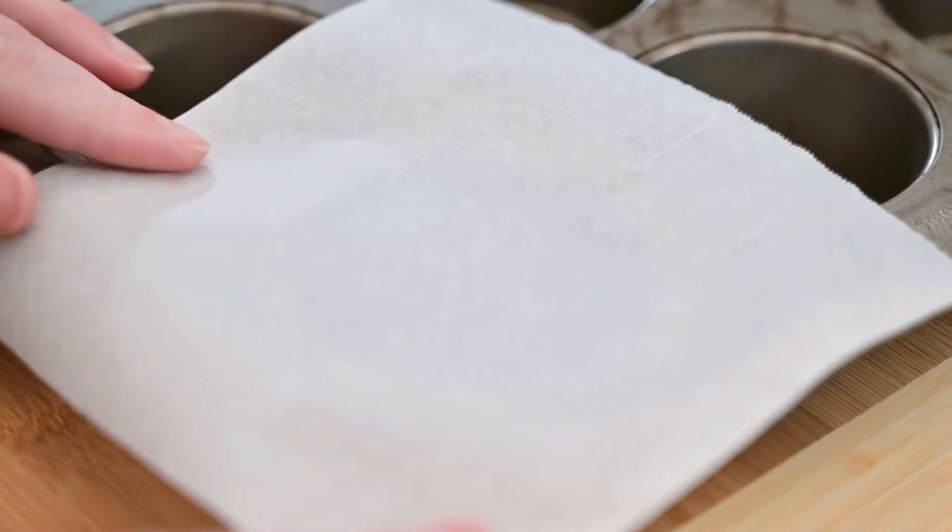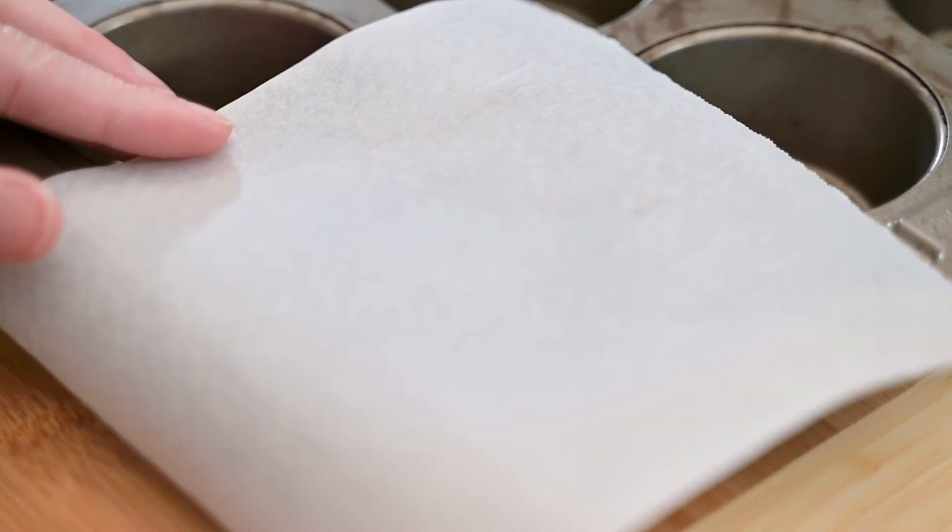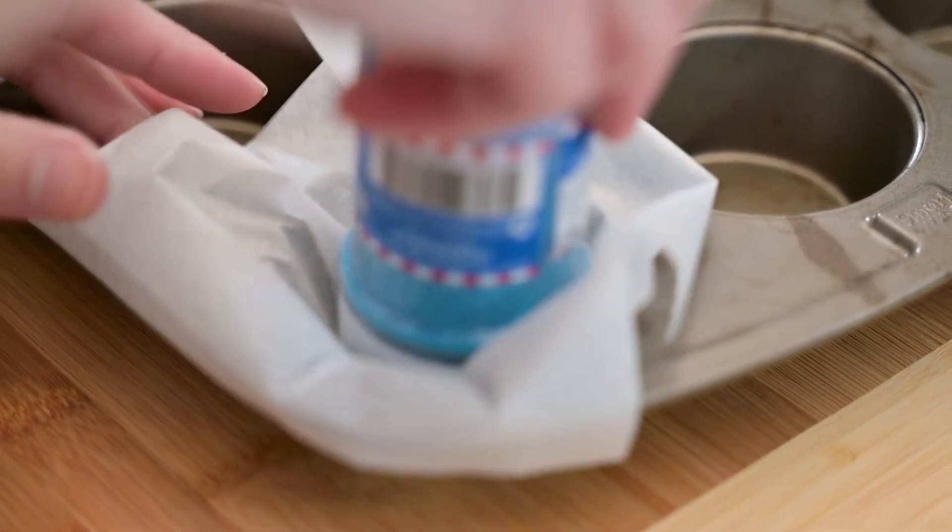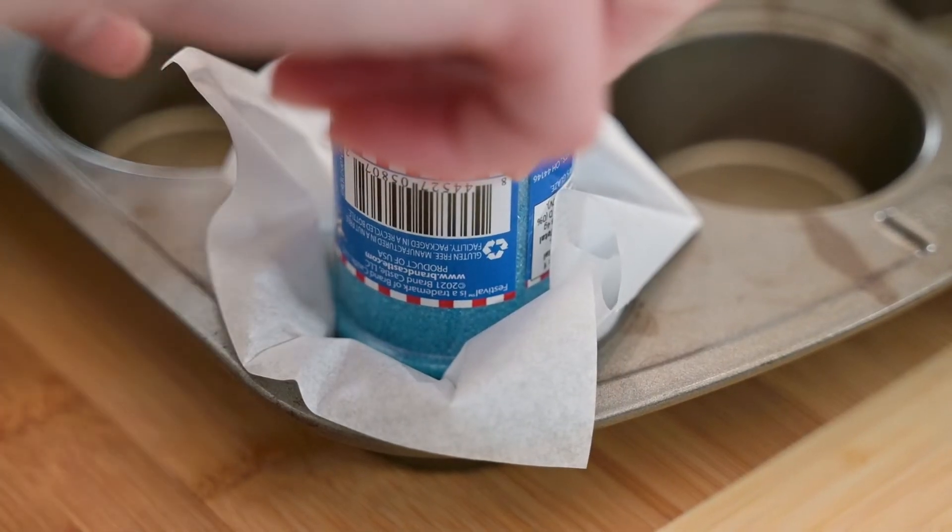Another way to shape these liners is to center the square of parchment paper onto a muffin pan cup and use a small jar or bottle to push the liner into the cup.